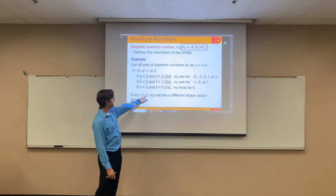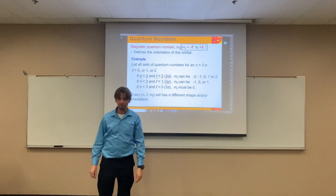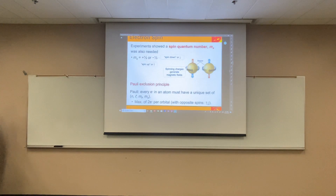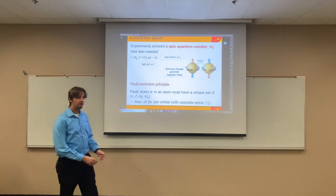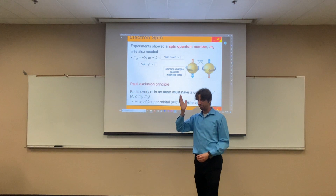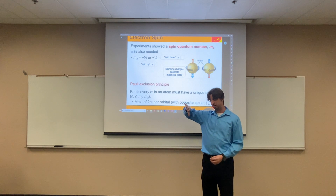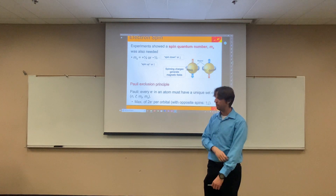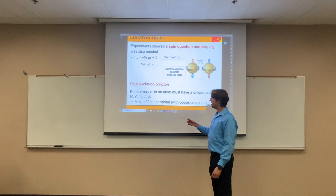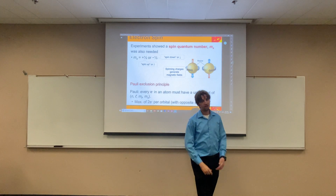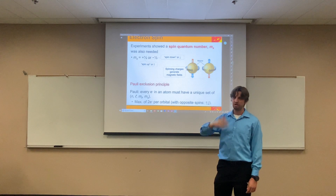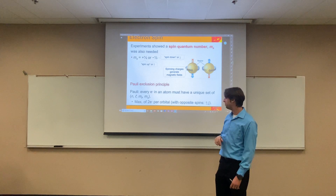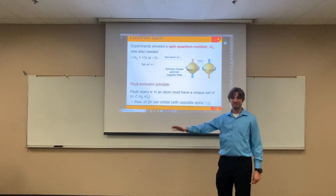Every combination of N, L, and m sub L has a different shape and/or orientation — that's important. The last quantum number — everyone's favorite because it's the easiest — is the spin quantum number, m sub S. m sub S only has two possible answers: plus one half or minus one half. Electrons can spin either up or down. There are no limits depending on other quantum numbers — m sub S is always just plus one half or minus one half.